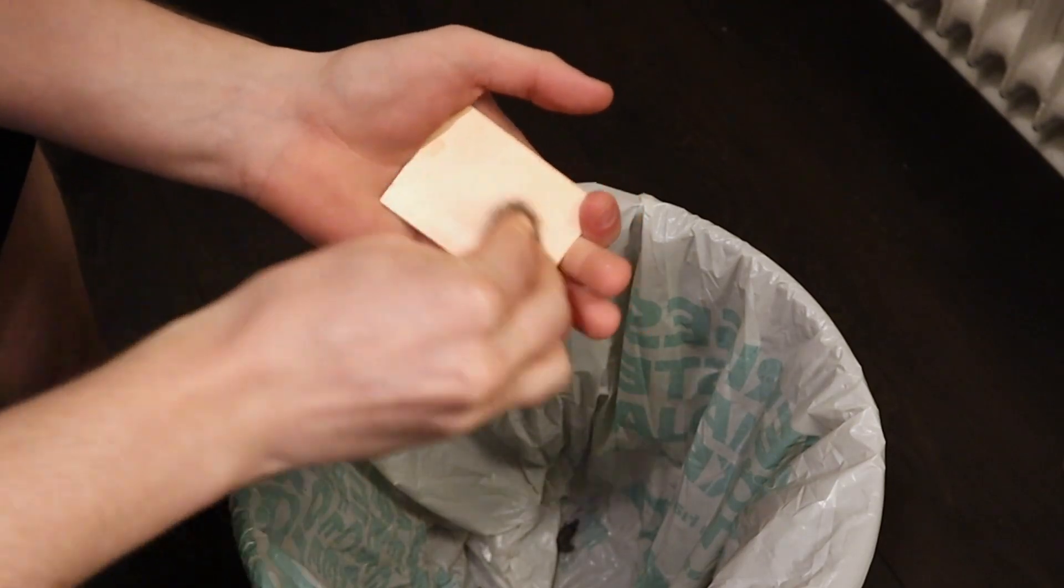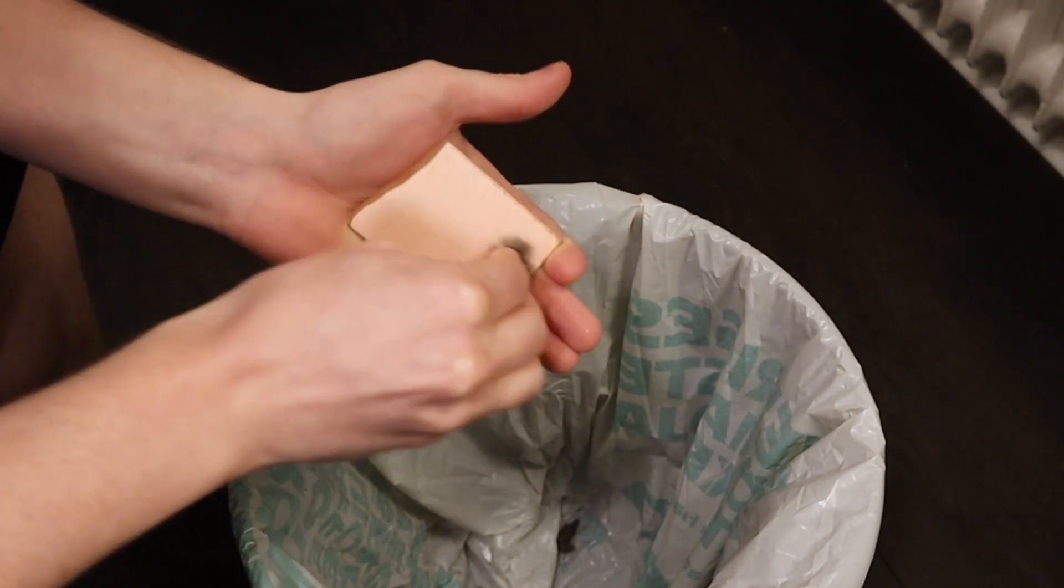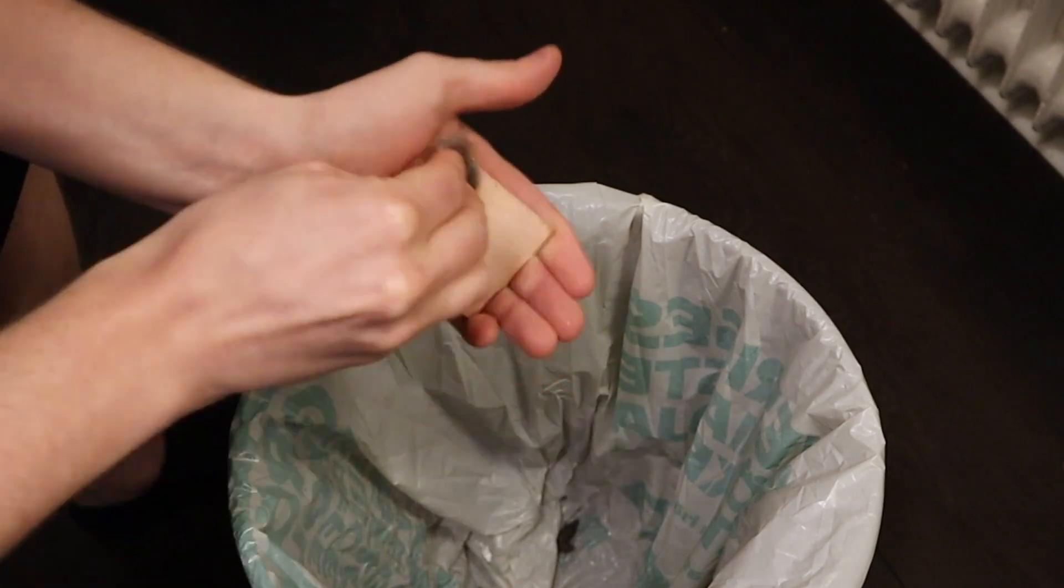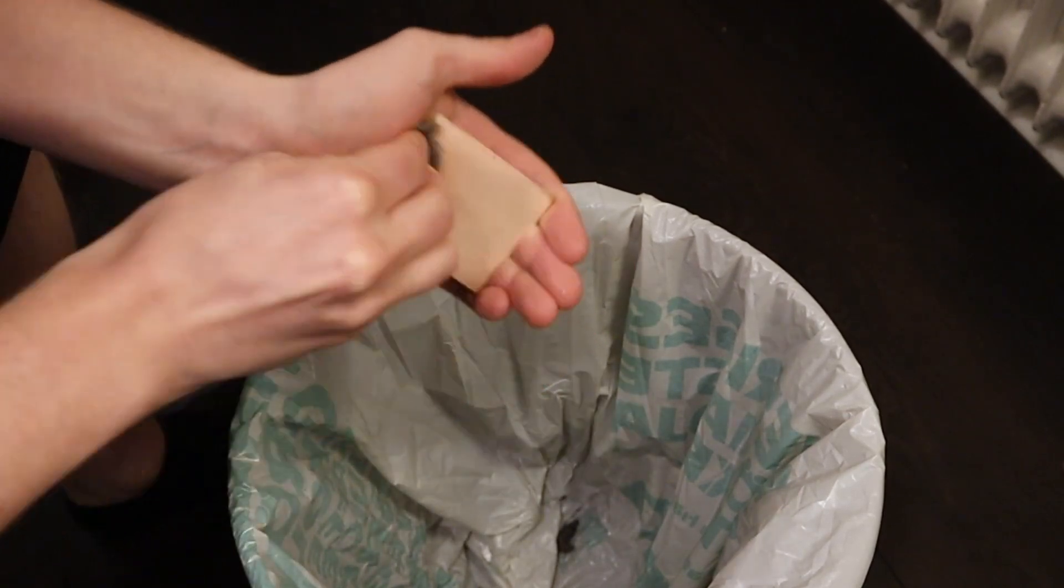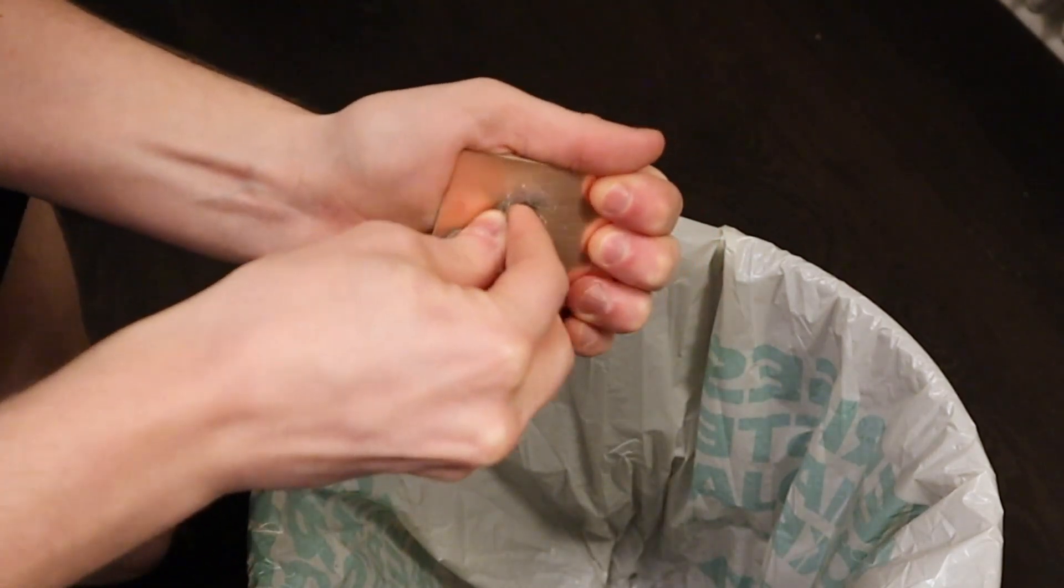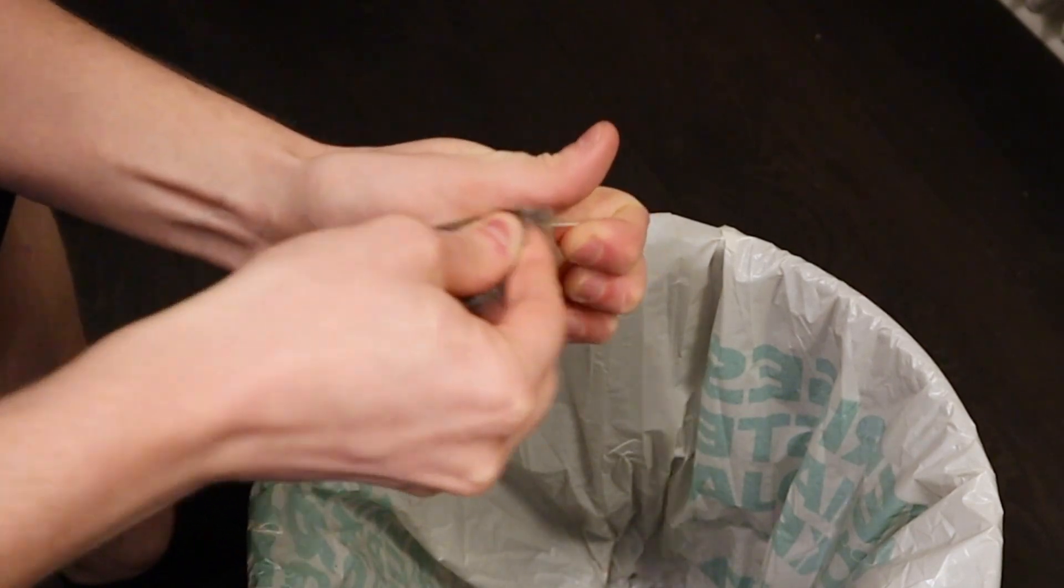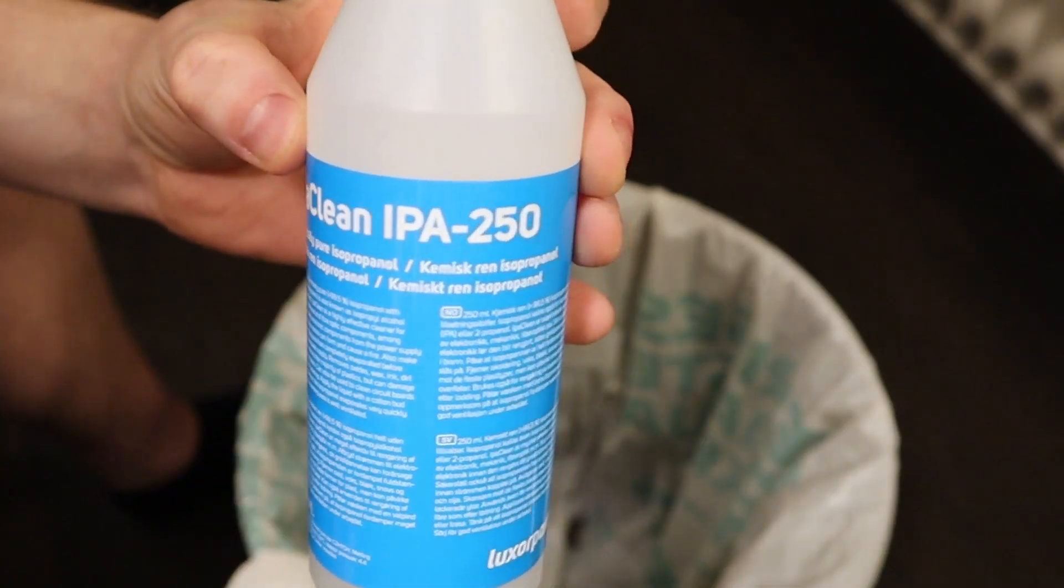I've decided to use the toner transfer method without heat since it seemed to be a simple method that doesn't require many tools. I use steel wool on the copper board and get rid of the oxide layer. This takes a few minutes and then I clean it off with water and then clean it with some isopropanol.